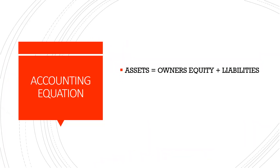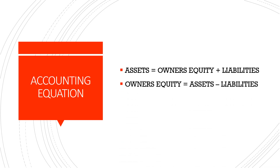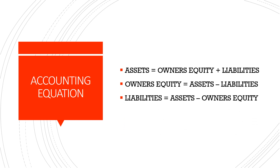We call this the accounting equation. The accounting equation can be read in three different ways: assets is equal to owner's equity plus liabilities; owner's equity is equal to assets minus liabilities; or liabilities is equal to assets minus owner's equity. You're just rearranging the values in each section.